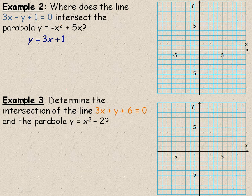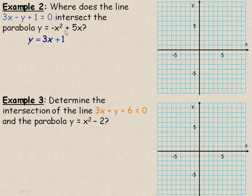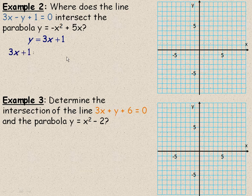So now we have the line solved for y, and we already have the parabola equation solved for y. So we can equate -x² + 5x and 3x + 1.